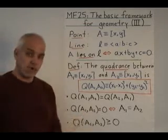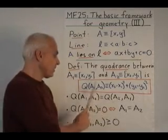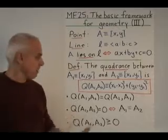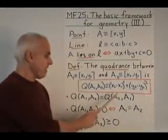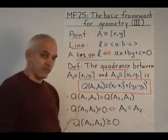Secondly, the quadrance is zero precisely when the two points are actually the same. Because if this square plus this square equals zero, then this must be zero and this must be zero as well.